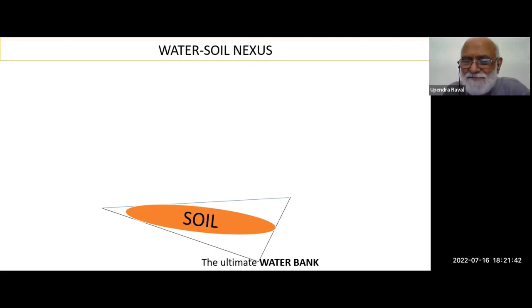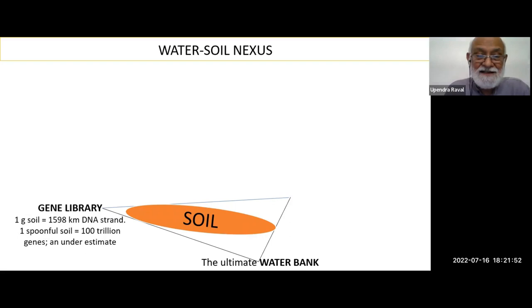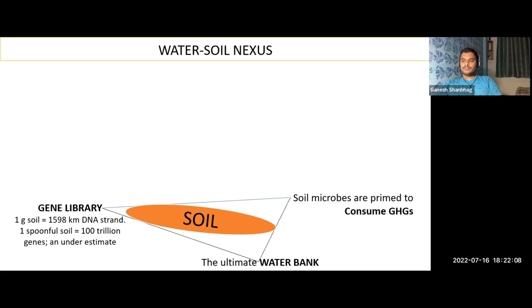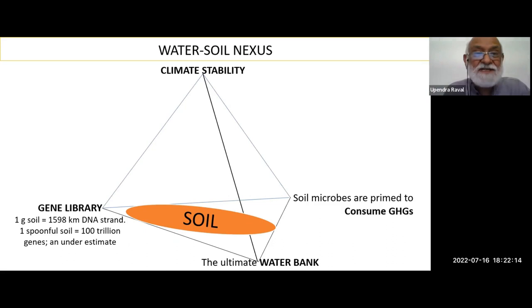Soil has three important factors. It is the water bank — not ocean, not dam, not turbines. There is the greatest gene library. One spoonful of soil contains 100 trillion microbes. All these three components contribute to climate stability.